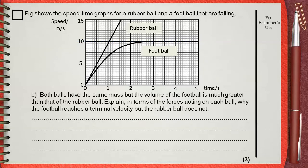Part B: Both balls have the same mass, but the volume of the football is much greater than that of the rubber ball. Explain in terms of forces acting on each ball why the football reaches a terminal velocity but the rubber ball doesn't.